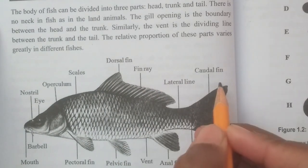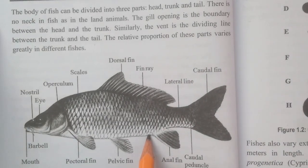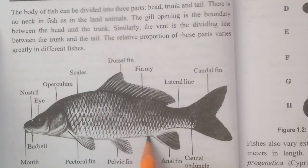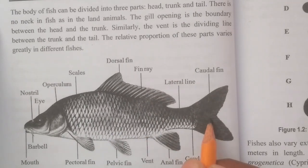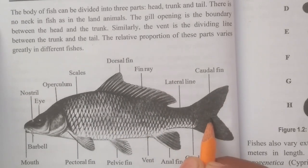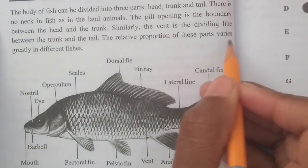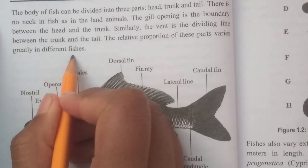The vent is the dividing line between the trunk and the tail. The relative proportion of these parts varies greatly in different fishes.